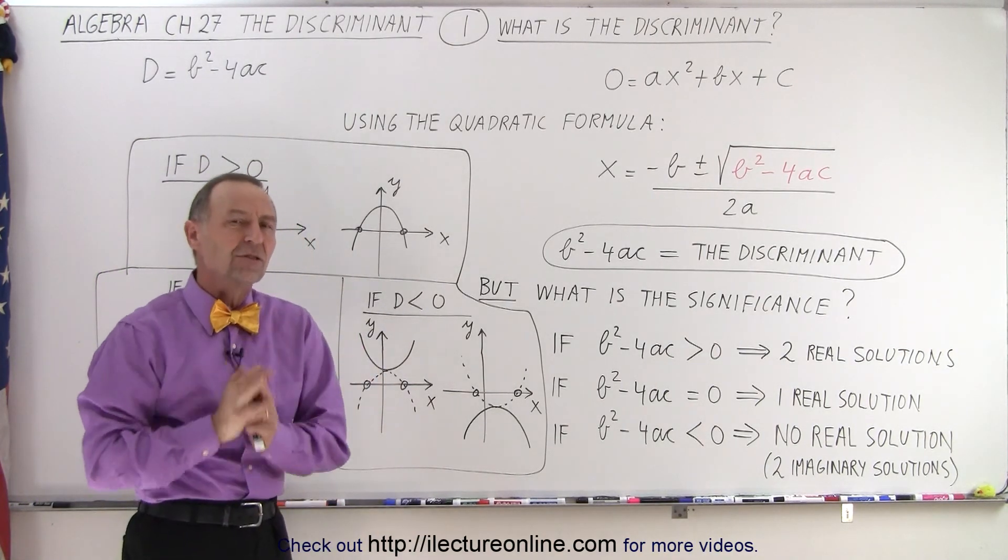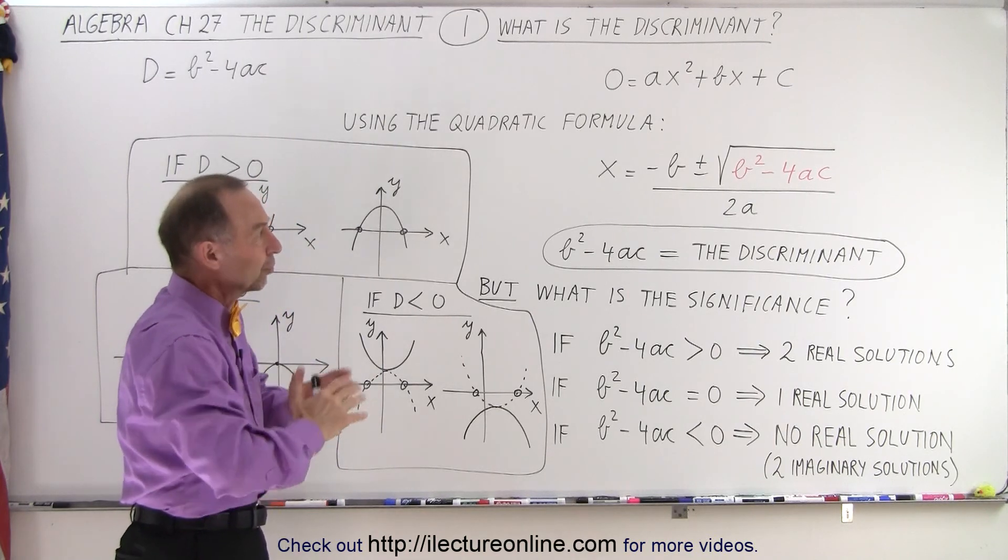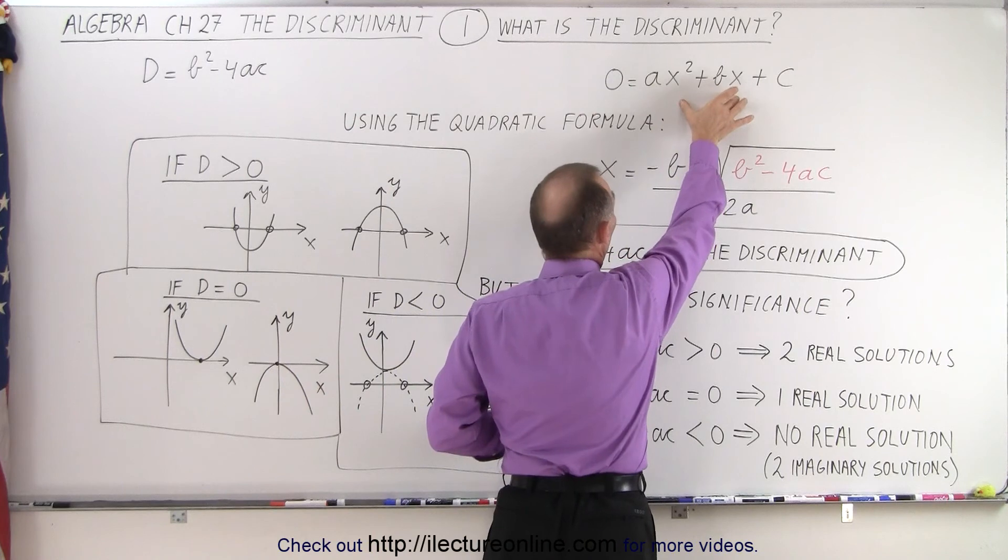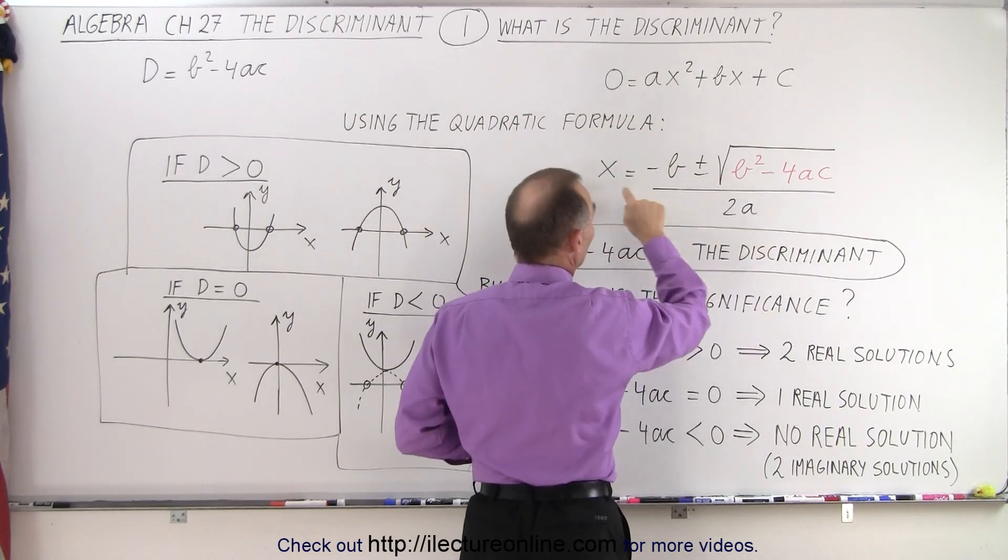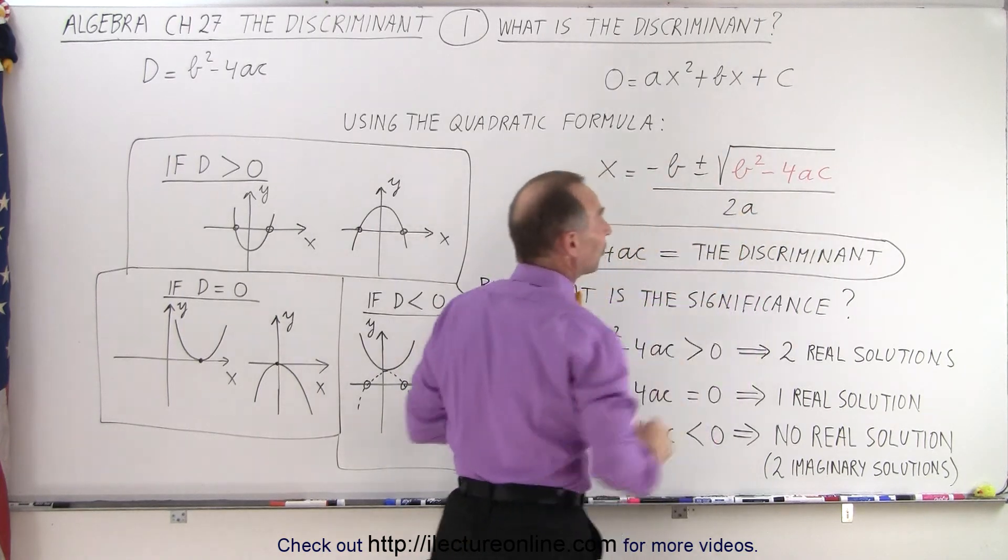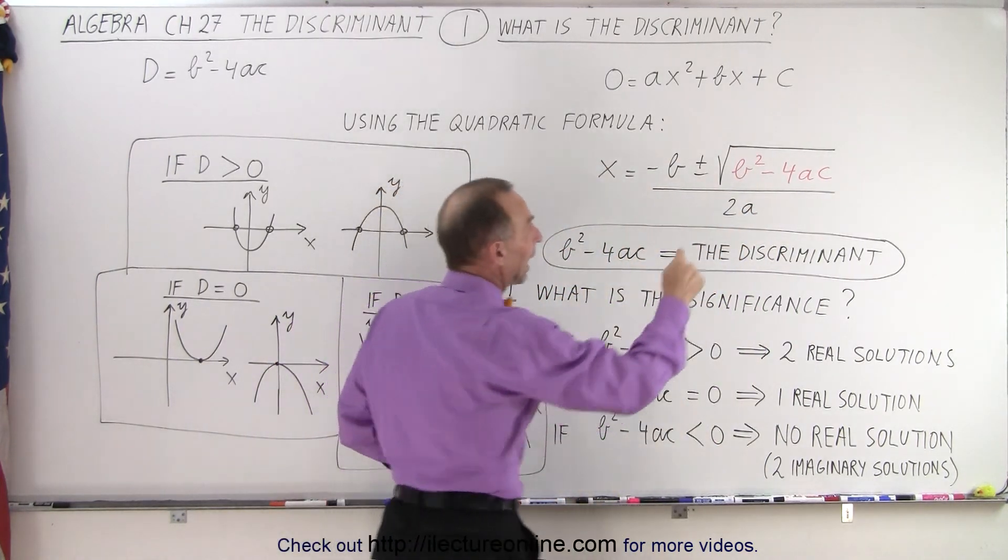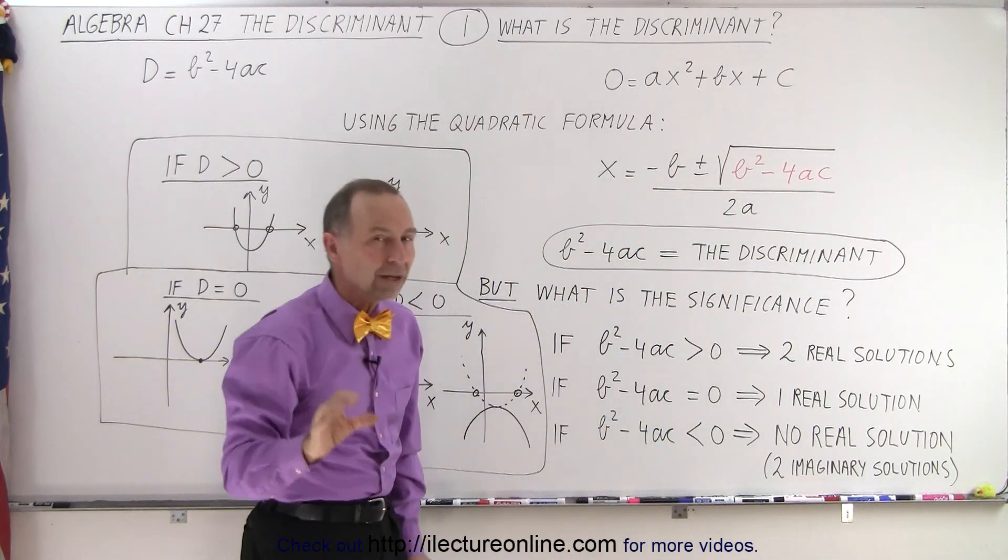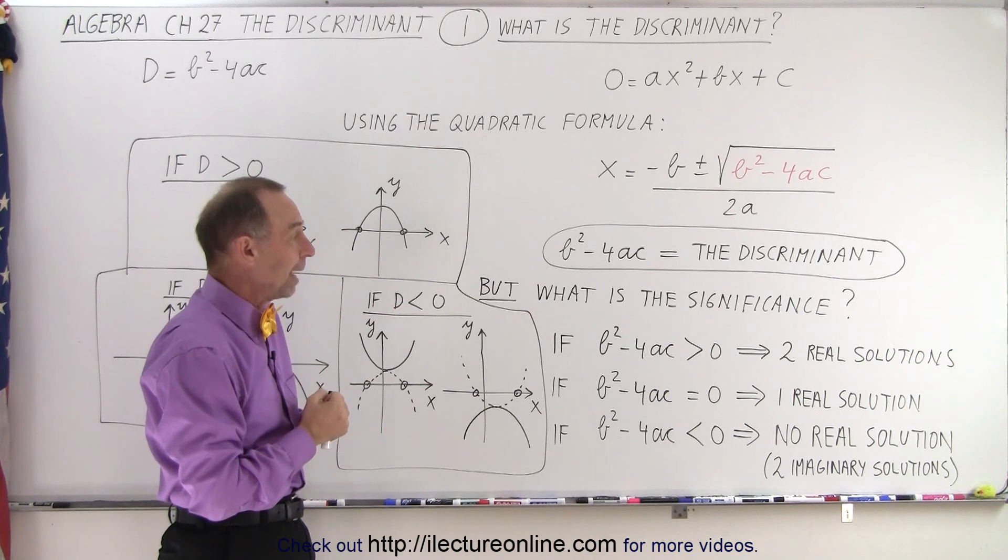So what is the significance of that discriminant? Well it turns out that once we have the quadratic equation partially solved in this format, in other words we plug in what's b, what's a, and what's c into this formula, then we can look and calculate what's inside the radical. And depending upon its value we can glean some information from that.